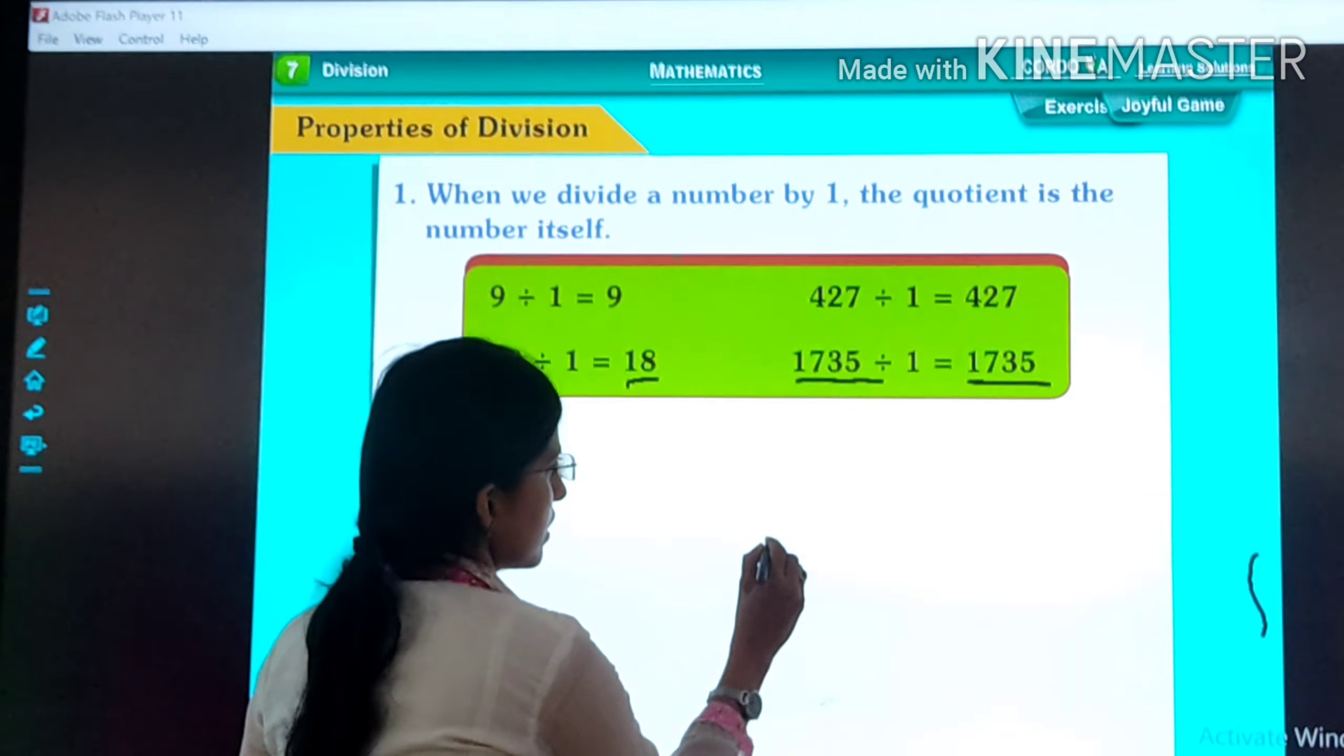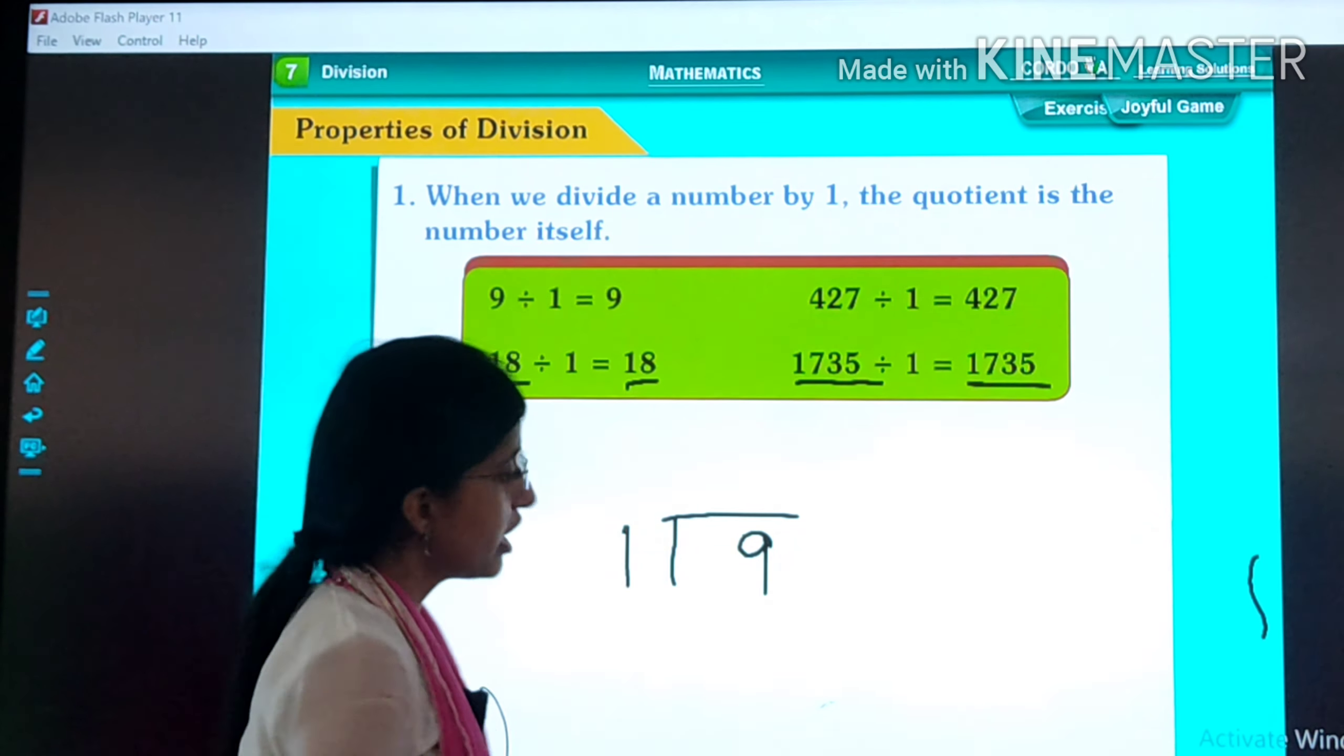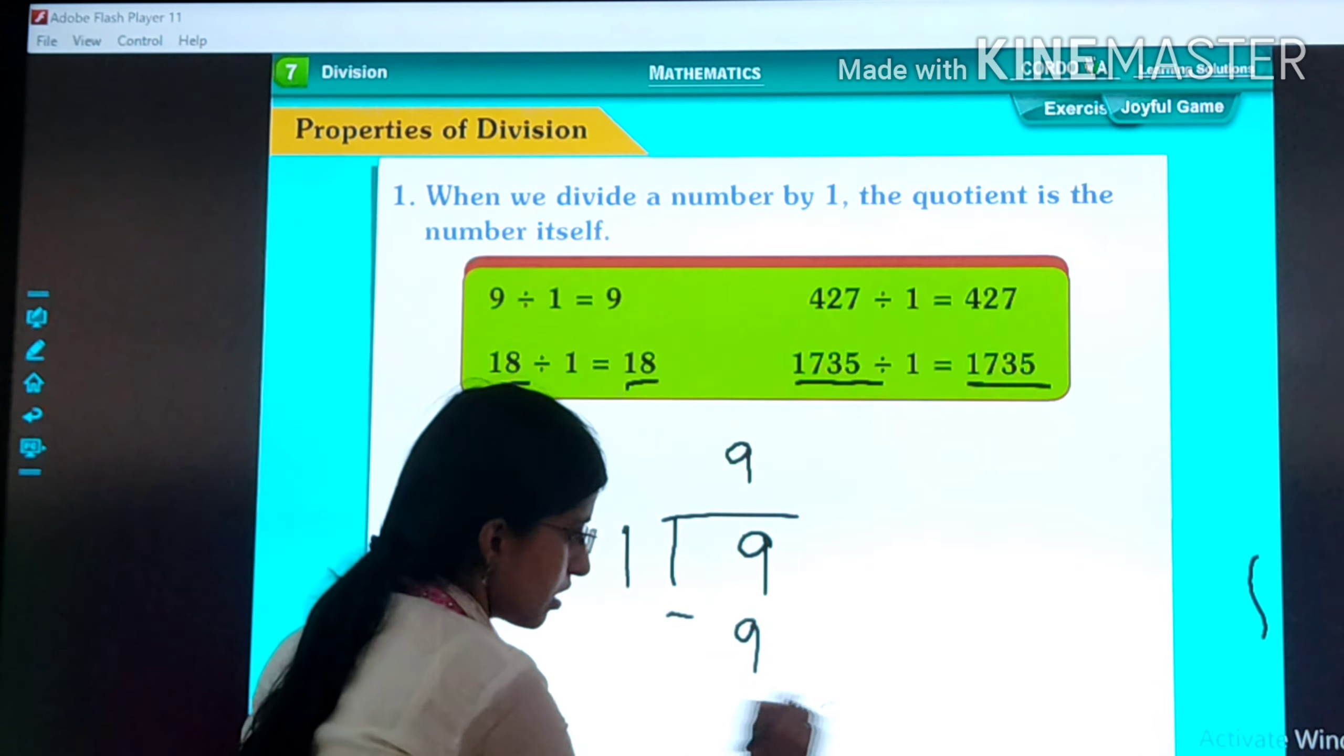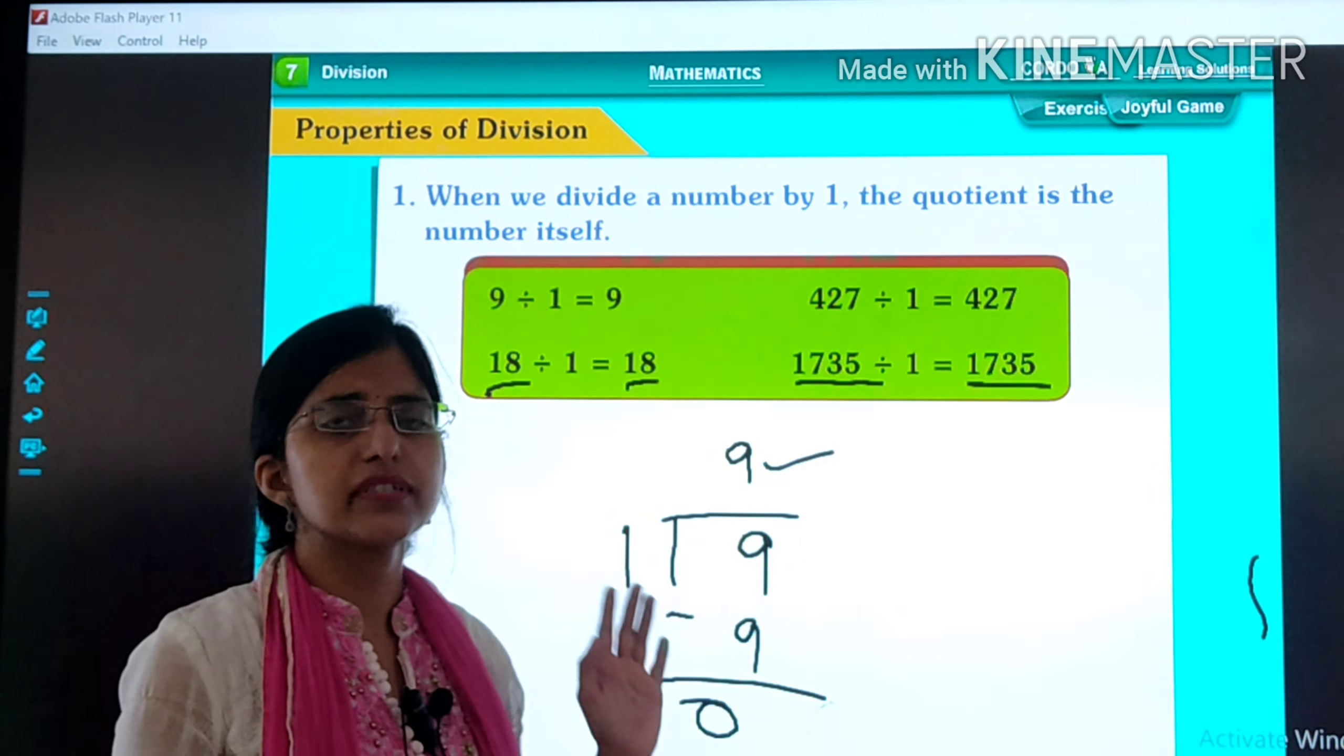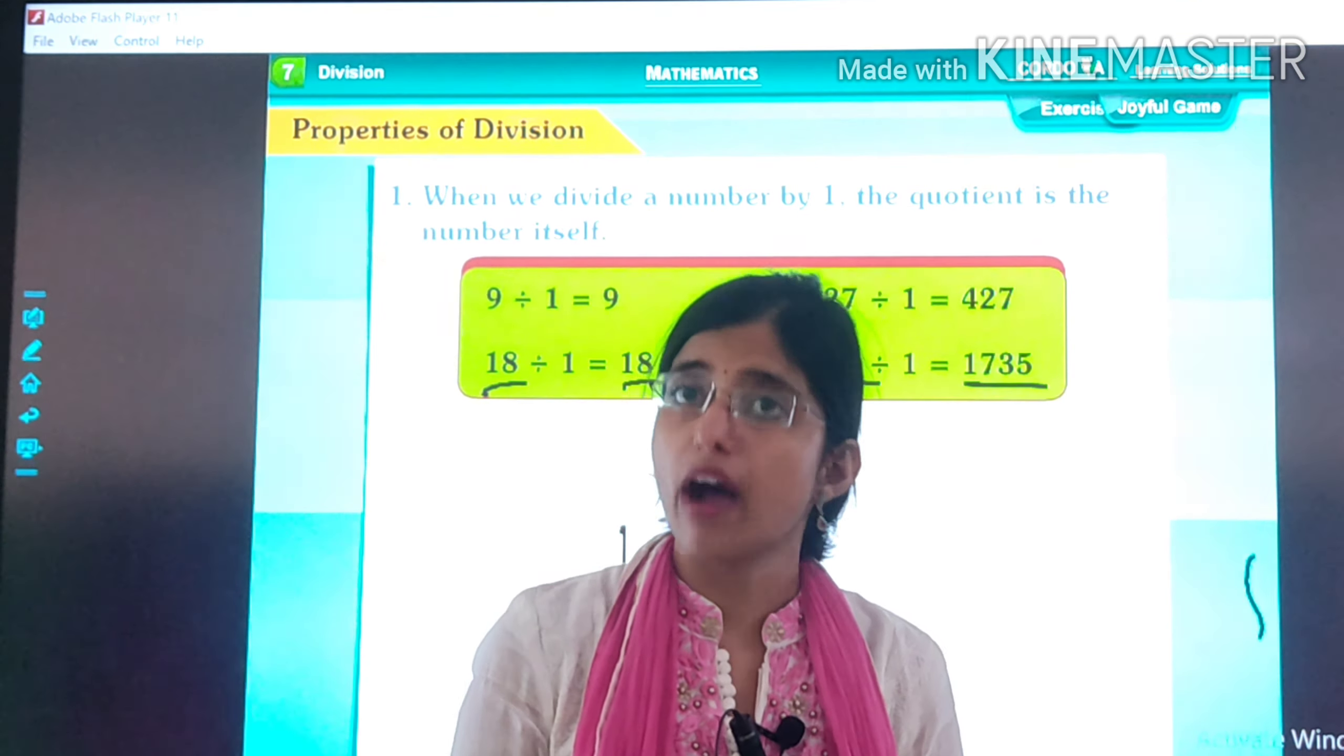Because when we divide 9 by 1, so 1 nines are 9. That's why our quotient is 9. In every case we will get this answer. Whenever we divide any number by 1, we will get that same number back.